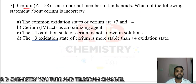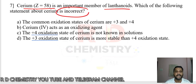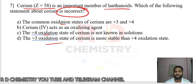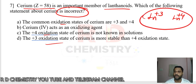Question number 7: cerium (atomic number 58) is the most important member of the lanthanoids. Which of the following statements about cerium is incorrect? The options concern cerium's oxidation states. Lanthanoids have +3 and +4 as common oxidation states, with the +3 state being the most stable in aqueous solution.